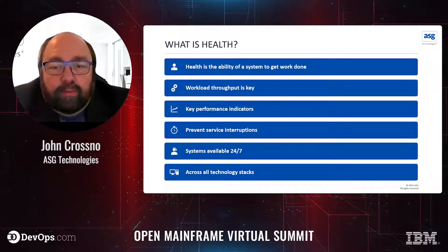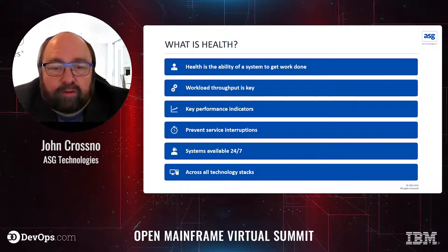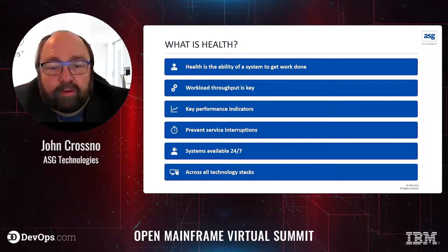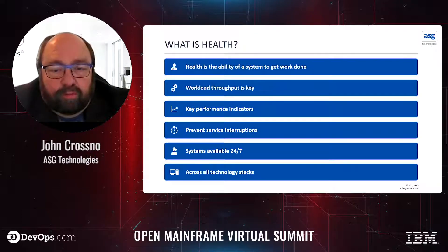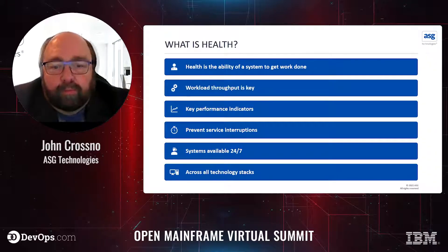At the end of the day, health is about the ability of a system to get work done. So much focus is given to applications that often the overall impact to the systems isn't considered as heavily. While it's important to tune applications and test their performance, the health of the systems that the application is running on is just as important. When an application is having issues, if the system itself is healthy, the impact to other applications is likely minimized. A healthy system will continue to allow work to happen. So maintaining a healthy system through monitoring of KPIs and proper capacity management is equally important — it's not just the view of what a single program is doing, but about workload throughput.